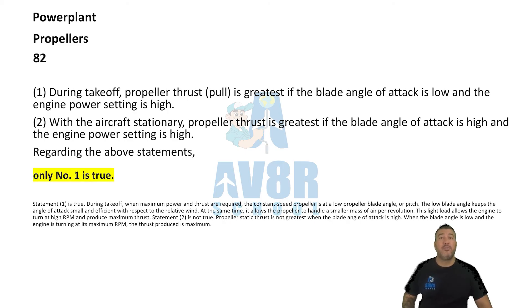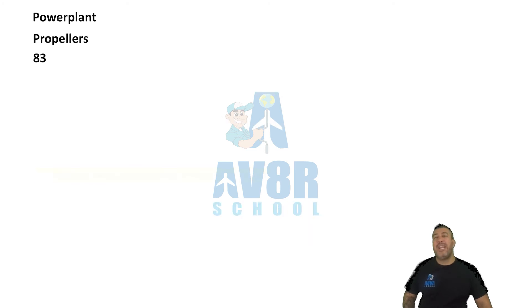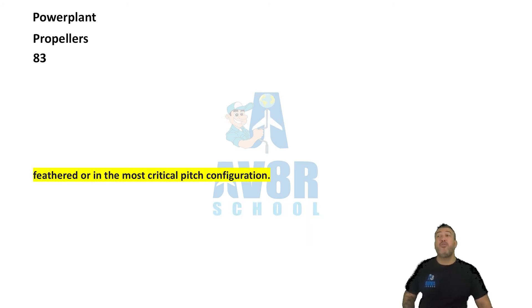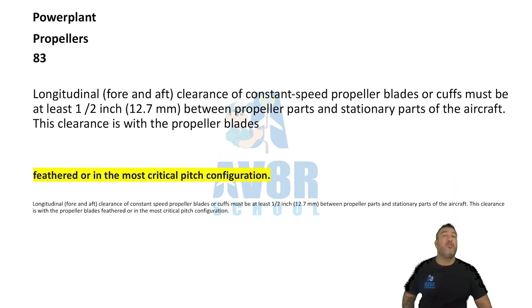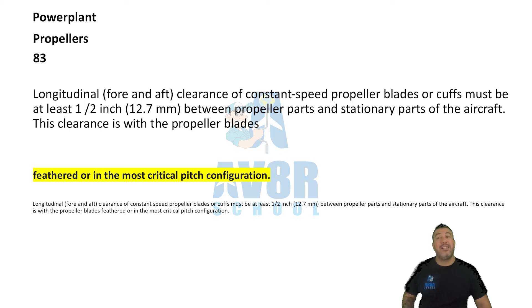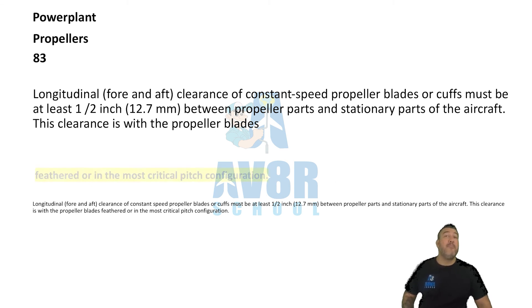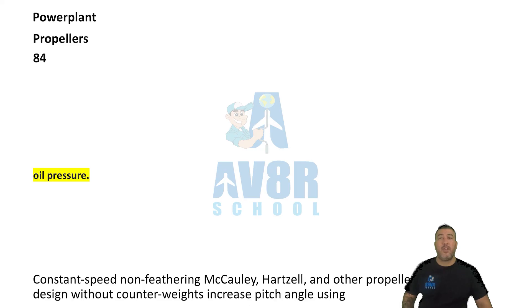Number 83: Longitudinal clearance of constant speed propeller blades or cuffs must be at least half an inch between propeller parts and stationary parts of the aircraft. This clearance is measured with the propeller blades feathered or in the most critical pitch configuration.